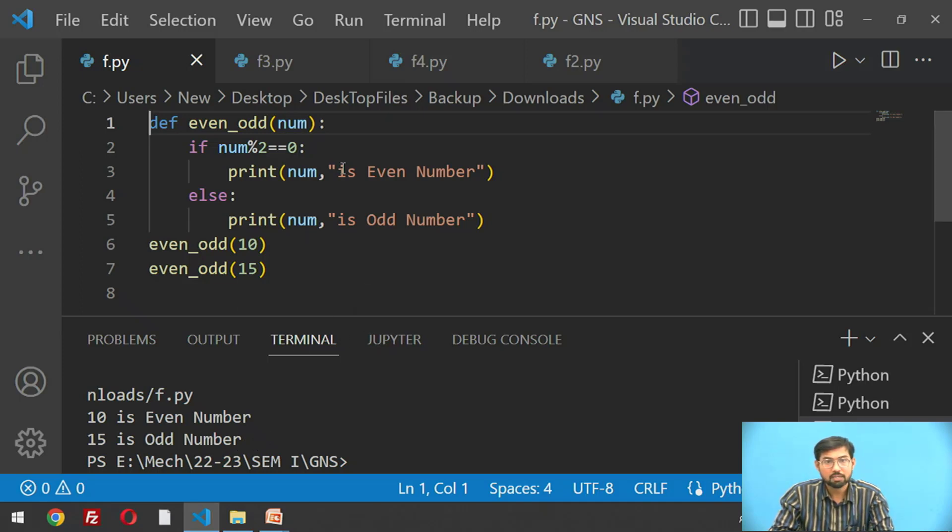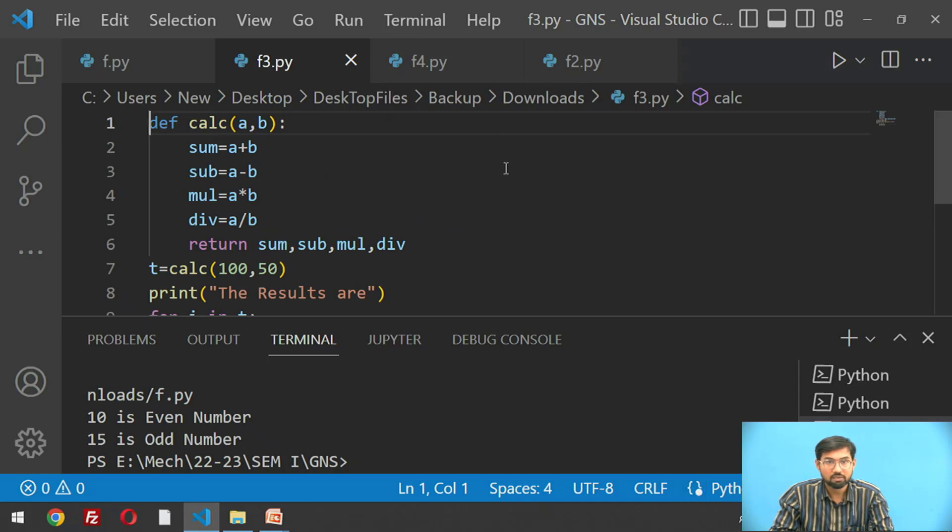Now let's move ahead with the second example, calculator using a defined function. Calculator of two numbers a, b, these are the two variables and arguments. We call calculator as a function where sum a plus b, subtraction a minus b, multiplication a star b, and division a divided by b. We return the statement using different arguments for our calculations.